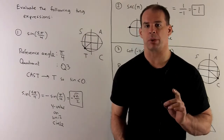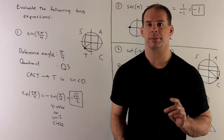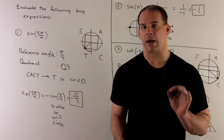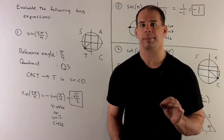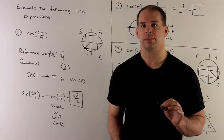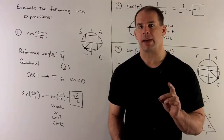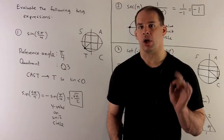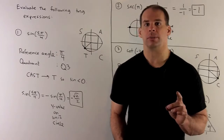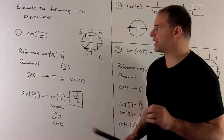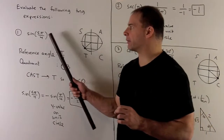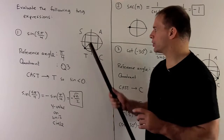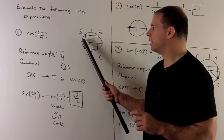Evaluate the following trig expressions. First, sine of 5π over 4. The first step is to sketch our angle on the unit circle. Since I have 5π over 4, 4π over 4 is π, which is right here.